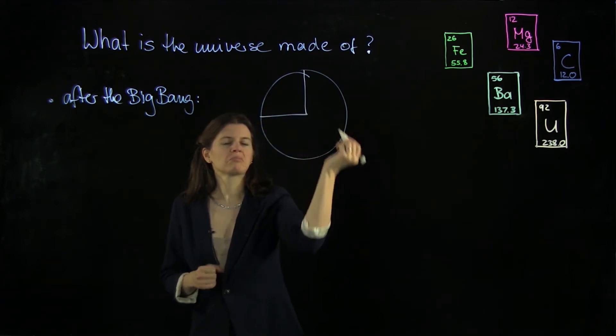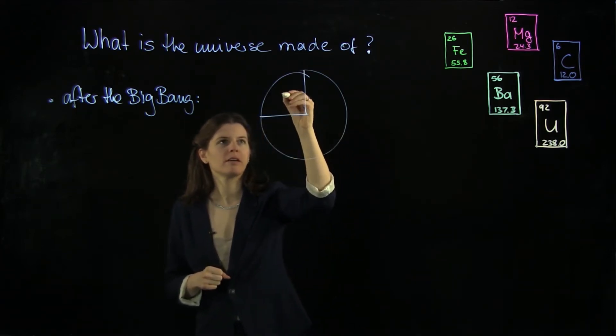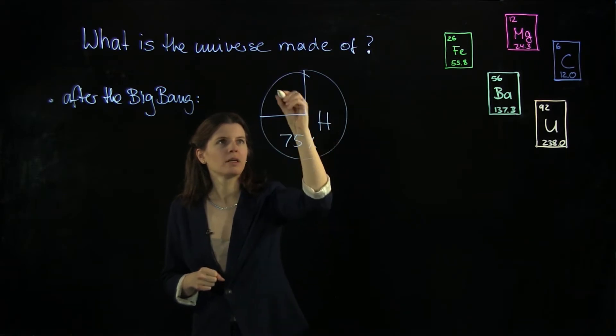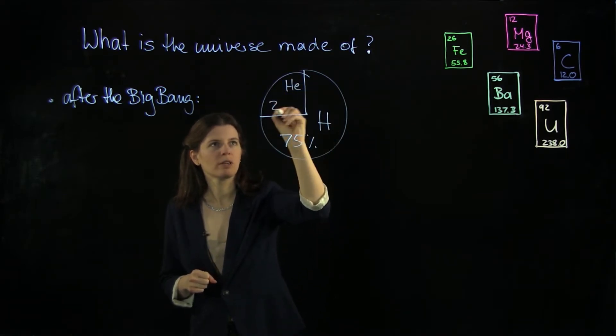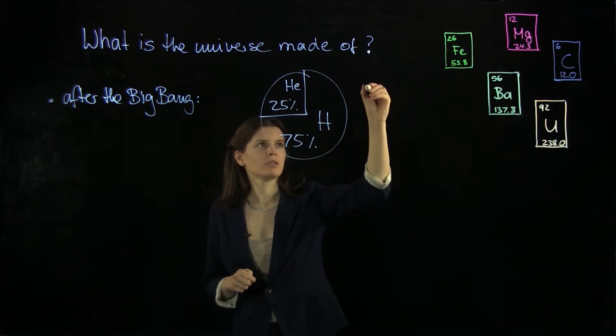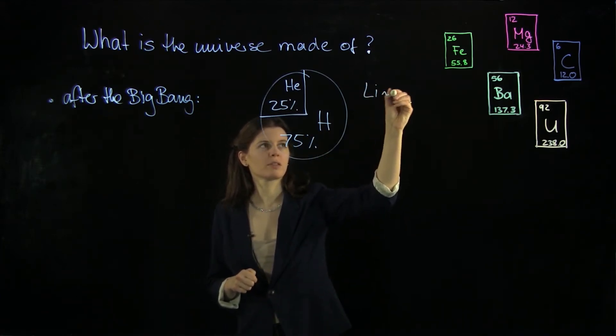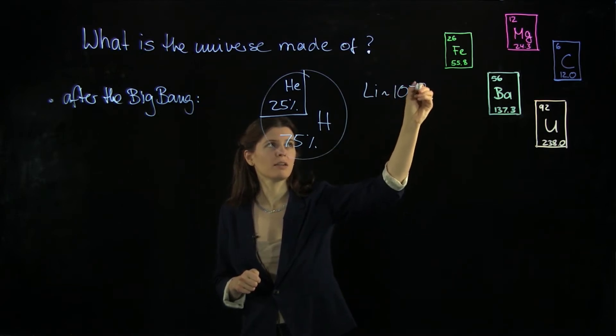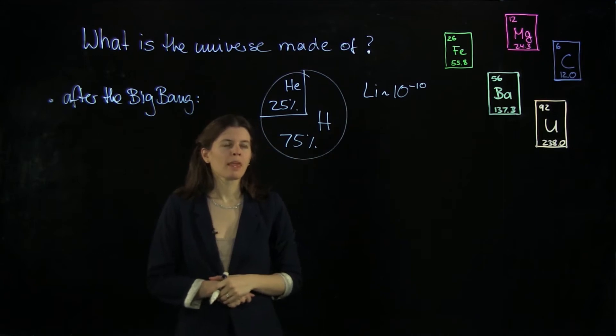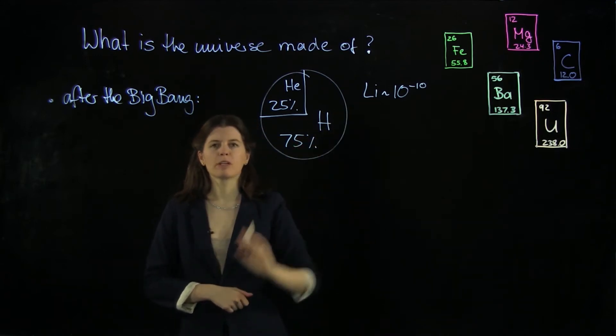We can just cut it up like this, and so this is hydrogen 75 percent and helium 25 percent, and it pretty much adds up to a hundred already. Lithium is of the order of 10 to the minus 10, which is really just a tiny amount. And we don't really need to worry much more about lithium.